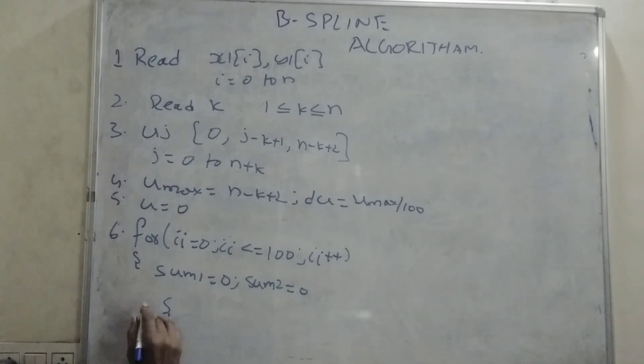Now, another for loop, I am trying to define here, for i is equal to 0, i less than or equal to n, i plus plus. Now, sum 1 is equal to sum 1 plus x1i into, this is Ni,k, blending function, recursive function, i, k, u, j and u.